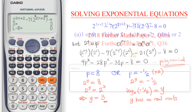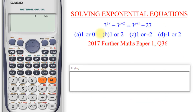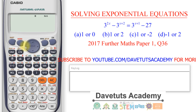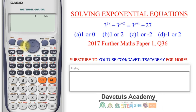One more question before we close. We need to solve for x, and looking at the options we know we are going to have two answers. As a rule of thumb, I will pick an initial value lower than the lowest solution and another higher than the highest solution.